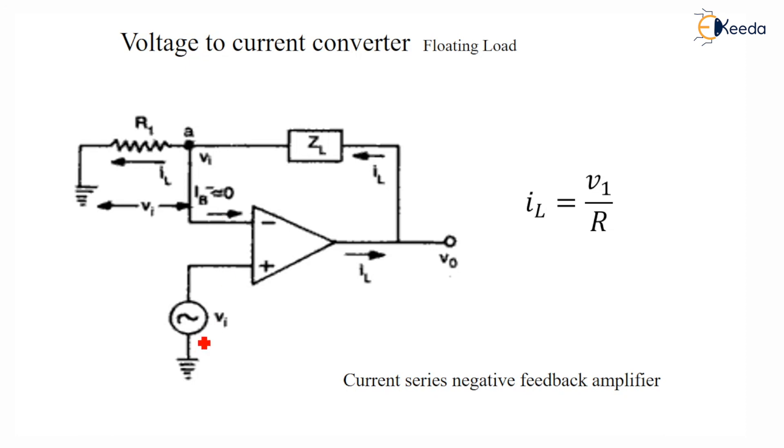We know VIN is equal to R1 into output current. So that's why output current is equal to V1 upon R.